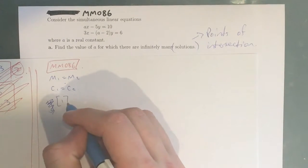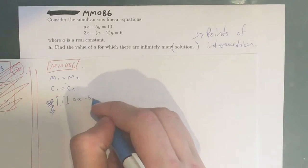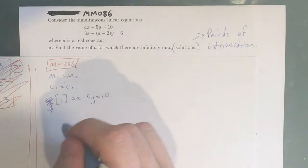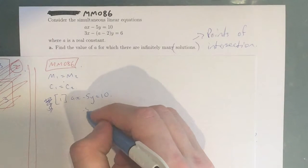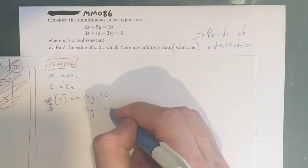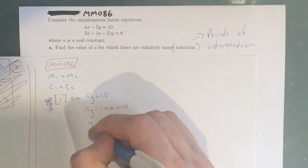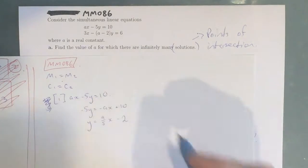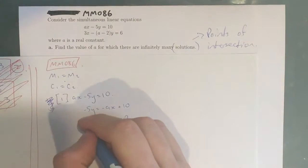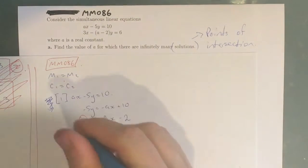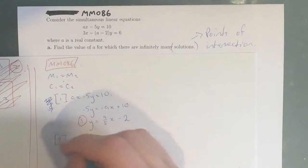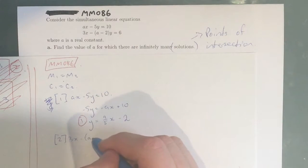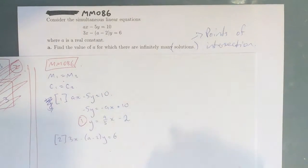Our first equation is AX minus 5Y equals 10, and we want to get that in the form Y equals MX plus C. So we have negative 5Y equals negative AX plus 10, which gives Y equals (A/5)X minus 2. That's our first equation.